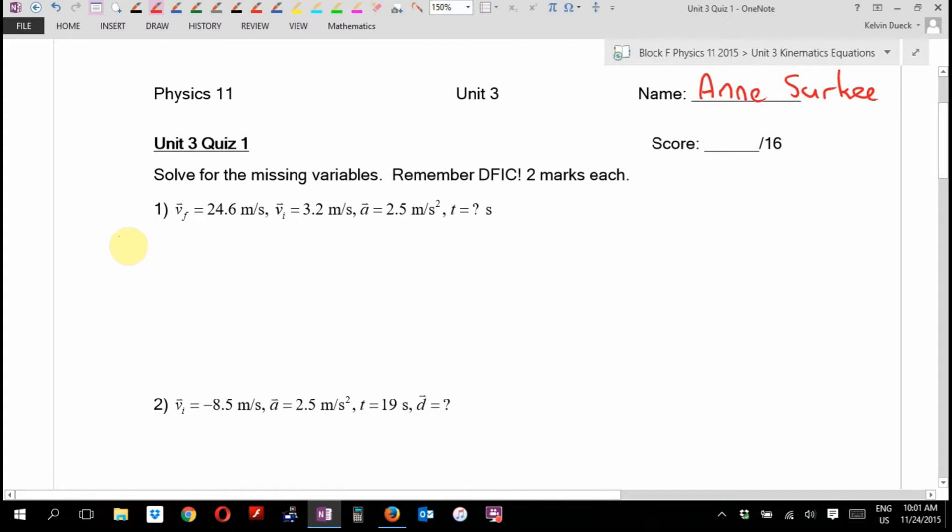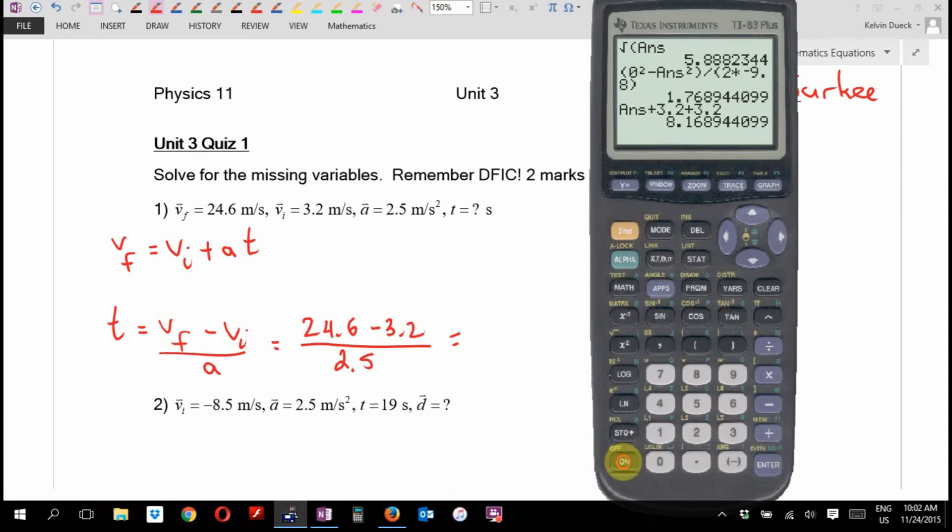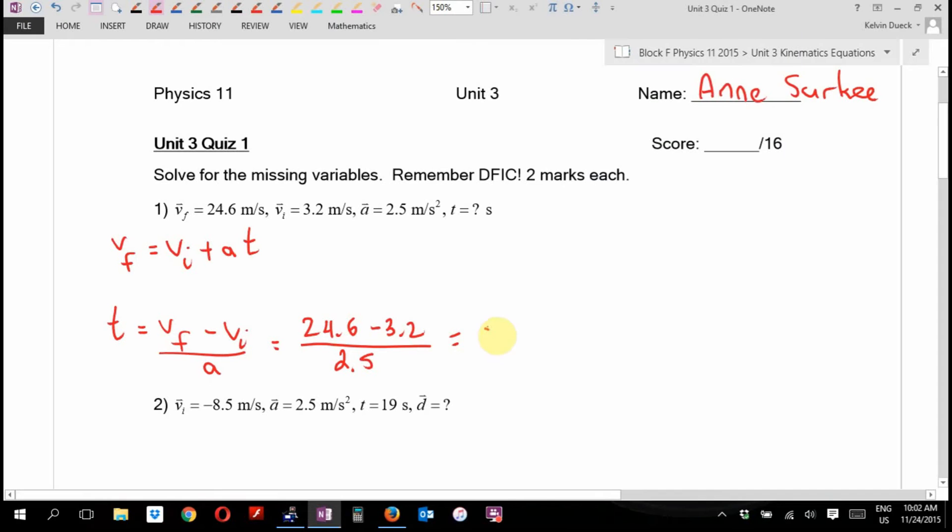Which equation am I going to use here? I'm going to use T equals VF minus VI over A, which is going to be 24.6 minus 3.2 divided by 2.5. What is the answer? It's a fraction. There's more than one number on the top. I better put the top in brackets. It's bracket 24.6 take away 3.2 divided by 2.5. Is it 8.56? 8.56 what? Seconds. If you got that, two out of two.